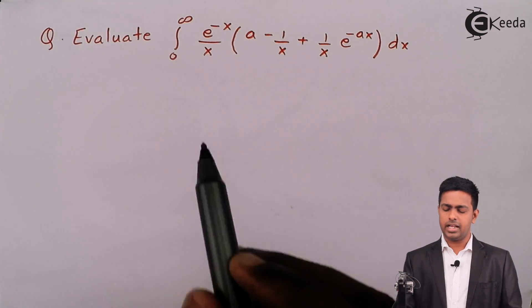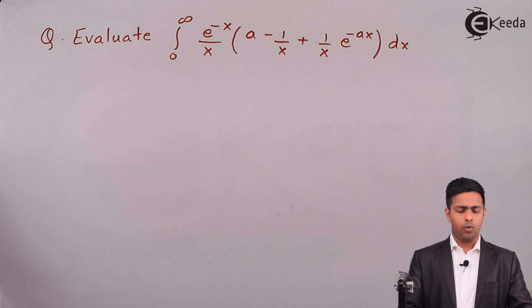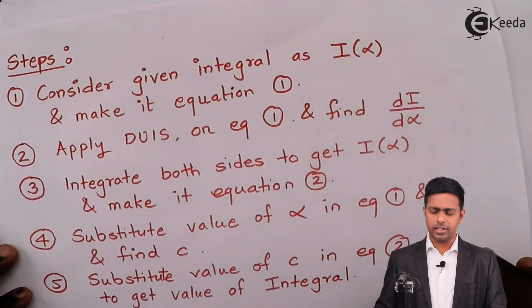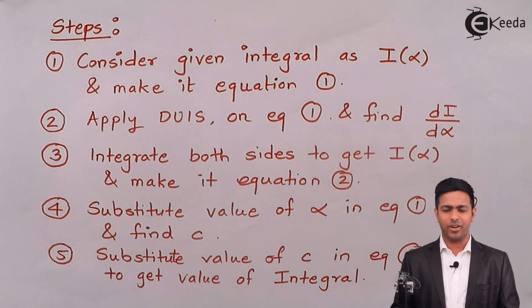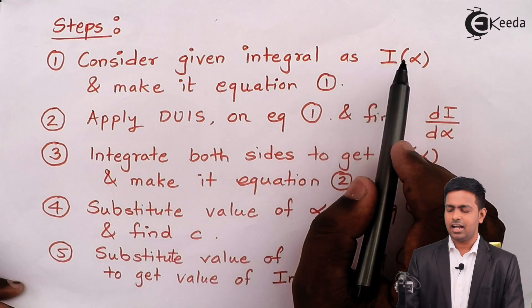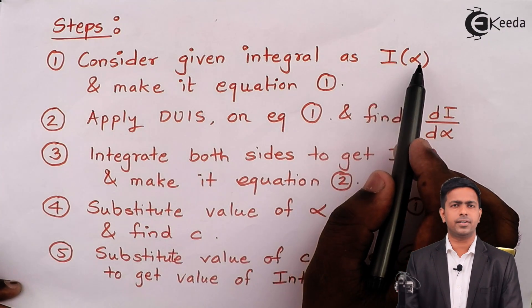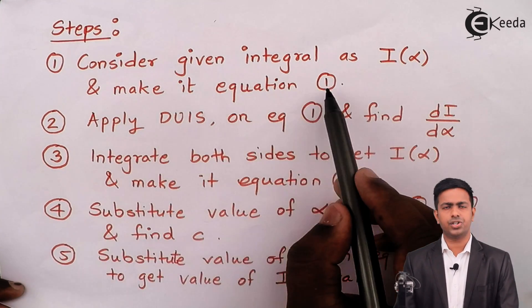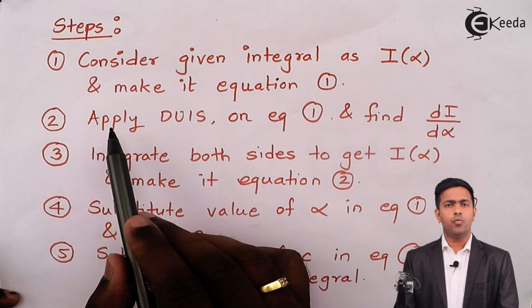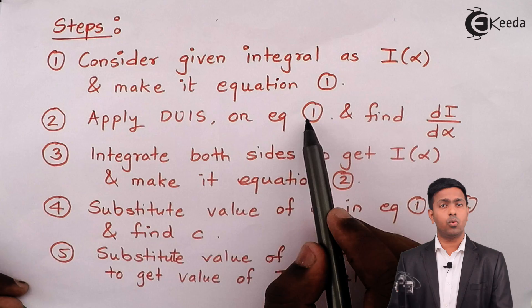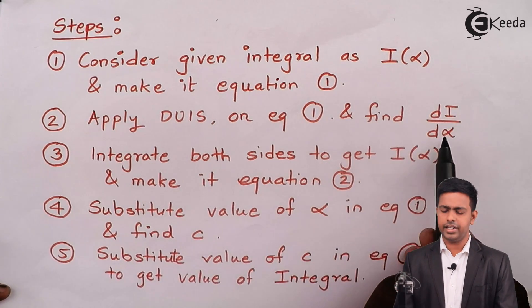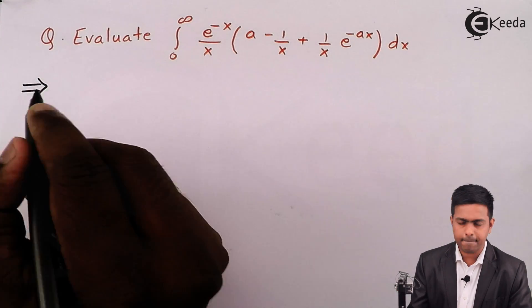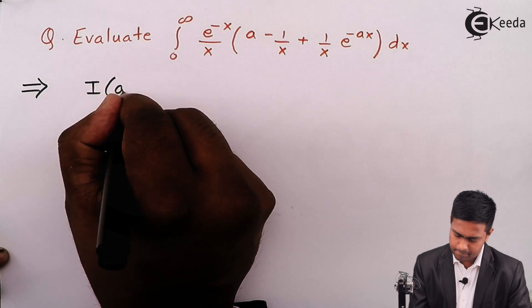In this integration the variable is x whereas a is a parameter. There are five steps. In step number one we consider the given integral as I of alpha, or I of that parameter. Here our parameter is a, so I would say this as I of a and make it equation number one. Then we apply DUIS on equation number one to find DI by DA.